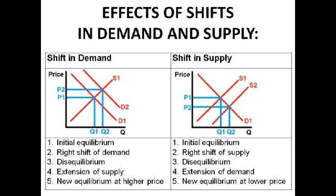With supply, if there is a right shift in the supply curve, for a while there will be excess supply. But there will soon be an extension of demand because demand will rise to meet the new supply. A right shift of supply leads to lower prices, so demand will increase, meaning there will be a new lower equilibrium at P2.